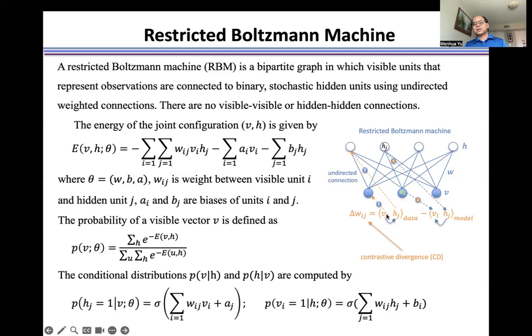We use expectation over data and expectation over model to calculate delta w. Then we use contrastive divergence to speed up the simulation.